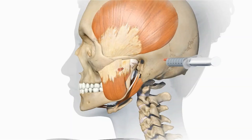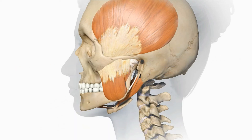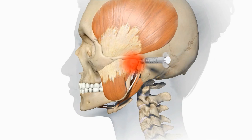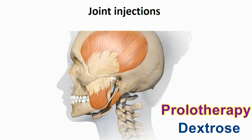Arthrocentesis, also called joint aspiration, is a procedure in which a needle is used to take fluid out of a joint to remove harmful bodies and substances. Joint injection of substances such as corticosteroids or Botox can reduce TMJ pain. Another type of injection called prolotherapy involves injection of irritant substances such as dextrose solution, which causes fibrosis of the capsular ligaments and restricts movement of the joint. It is effective in treatment of TMJ dislocation.